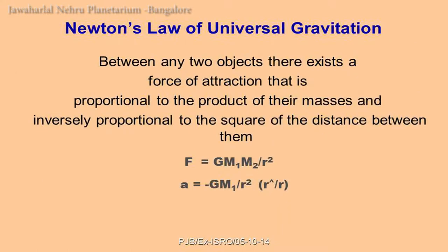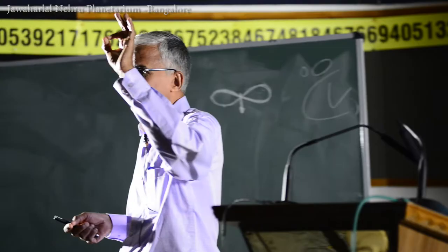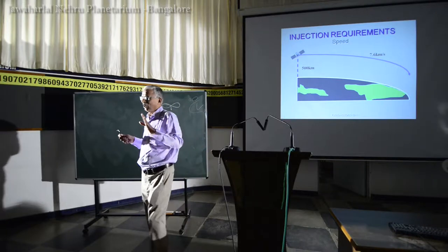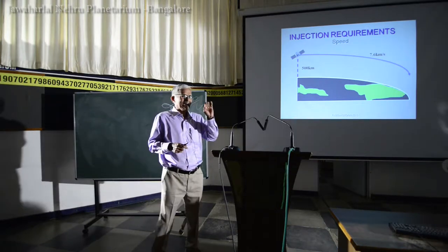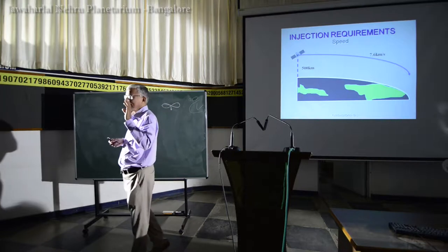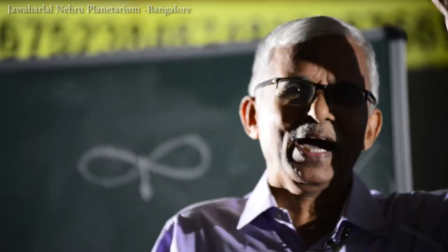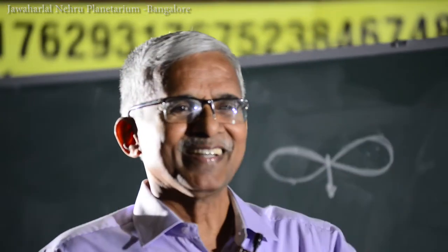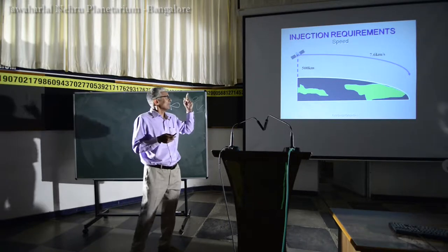The rocket must take the satellite to the required height and impart a velocity. At 500 kilometers height, it must impart approximately 7.6 km/s — that's about 24,000 to 25,000 km/h. If the satellite must go higher, the velocity to be imparted is less. But the rocket has two jobs: take it to the height and impart the velocity. Taking it to that height is itself a major task for the rocket.